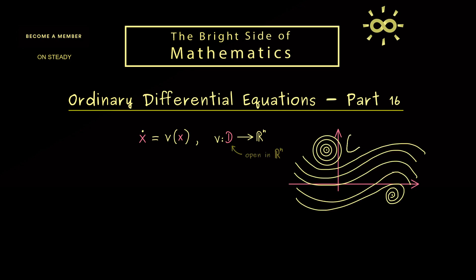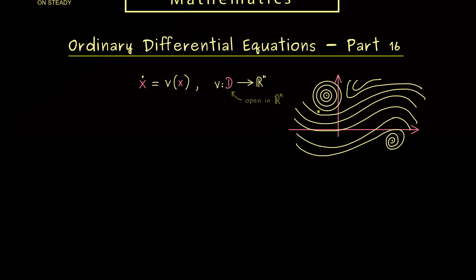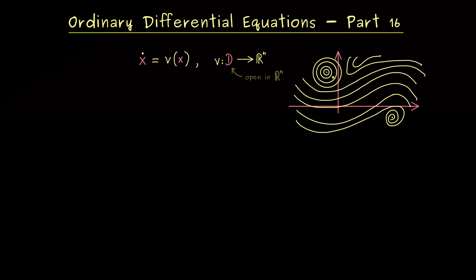In fact the phase portrait is just a collection of the orbits the solutions make. So please note an orbit is just an image of the solution, so we don't see the time variable but we see the points in D that are hit by the solution. And as we have already discussed in the last video we can have some nice orbits like such a circle or just a dot. And in fact these are the ones I want to define now.